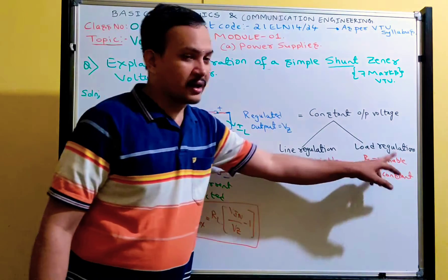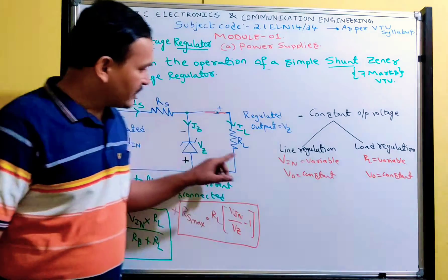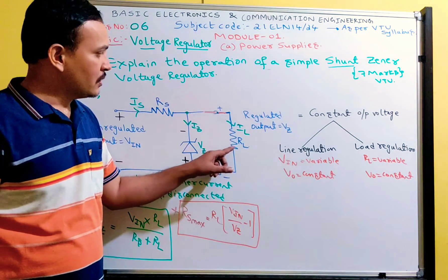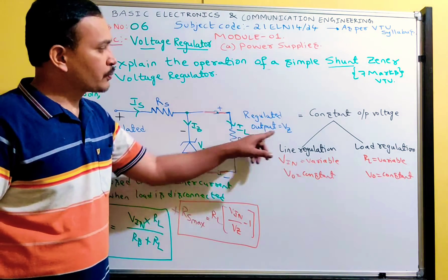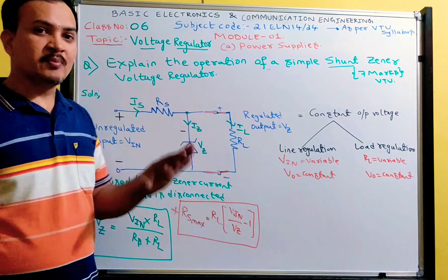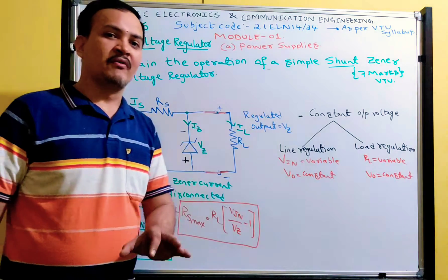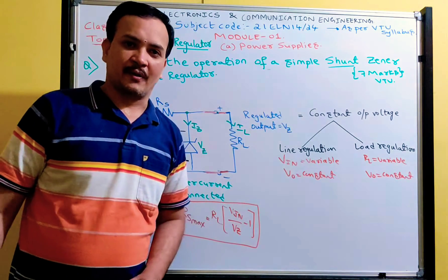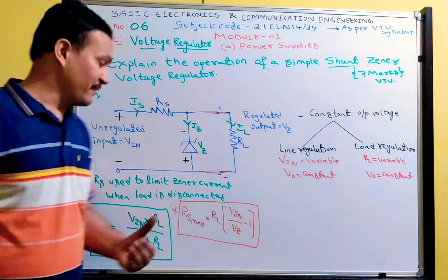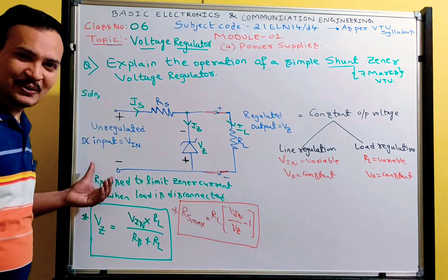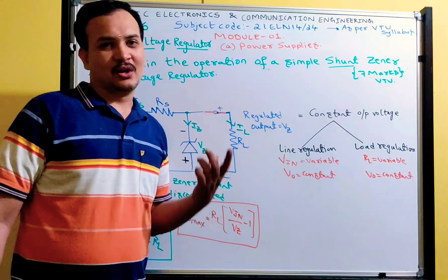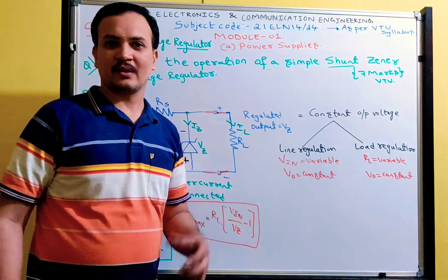There are two types of regulation: line regulation and load regulation. In line regulation, input voltage is variable — if there are any variations in the input voltage, you should still get a constant output voltage. The other case is load regulation: if there are any changes in the load resistance value, the output should also remain constant. Both can be achieved with the help of a zener diode — we can obtain constant voltage for any variations in input voltage or any variations in load resistance.